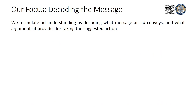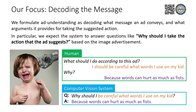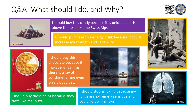The core task for understanding ads is to decode the message behind the image, which we formulate as answering the question: why should the viewer take the action that the ad suggests? We collect two sets of human annotations and reformat them into a single question. Automatically answering this question is challenging, as it requires reading all the signs that ad designers encoded for their human audience.